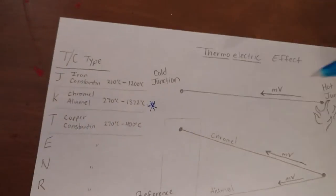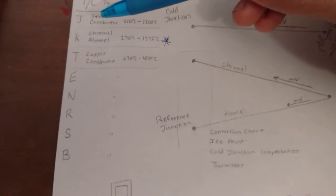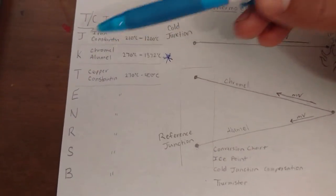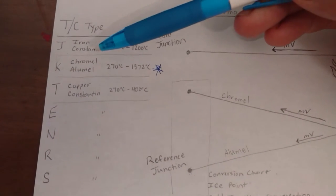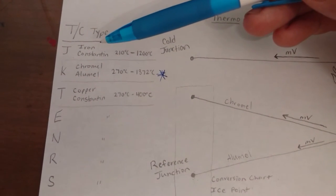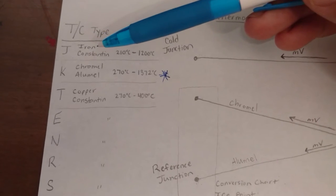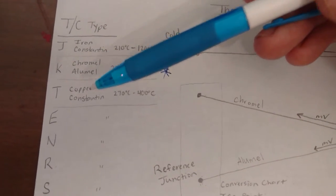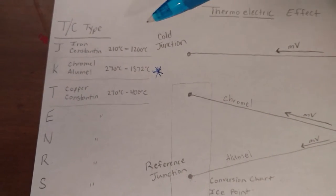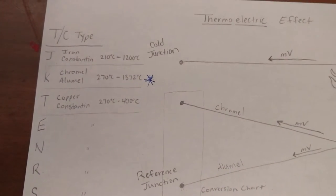Now, real quickly, there are eight major types of thermocouples and each one is made of two different types of wire, like iron and constantan, chromel and alumel, copper and constantan. They all have different ranges of temperature that they're designed to measure.